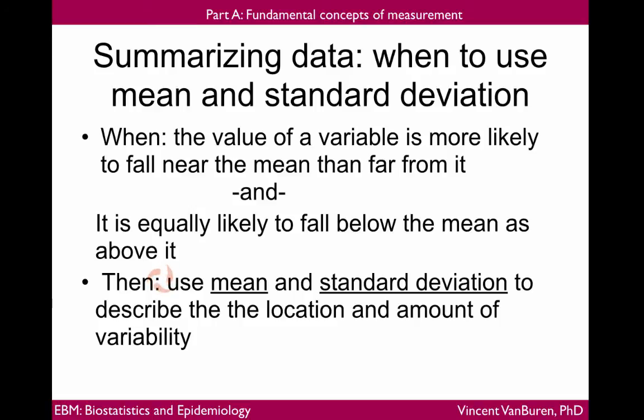When summarizing data, we need to consider the shape of the distribution to choose the best way to summarize data. When the value of a variable is more likely to fall near the mean than far from it, as is true with a normal distribution, and it is equally likely to fall below the mean as above it, also true of a normal distribution in the sense that it is symmetrical, then we use the mean and standard deviation to describe the location and amount of variability. These two traits are things we look for in deciding that something is normally distributed. When it is normally distributed, then the mean and standard deviation are a good description of that distribution.